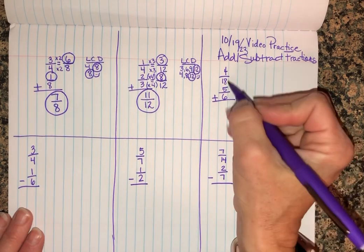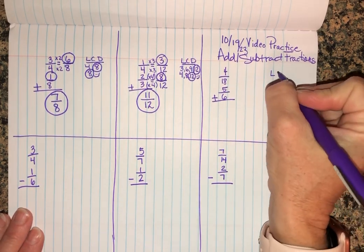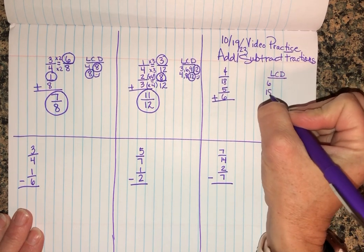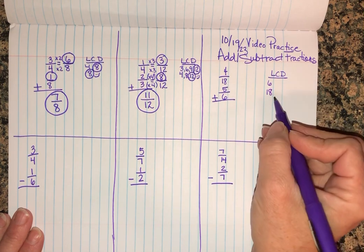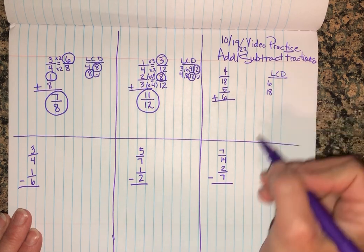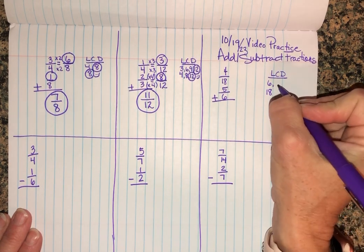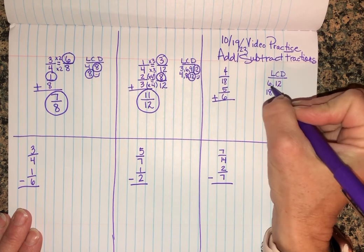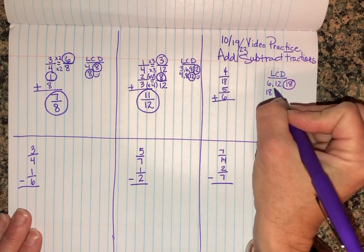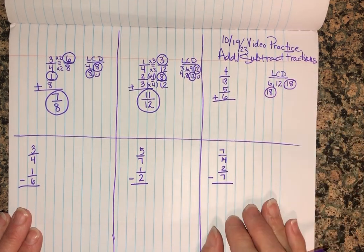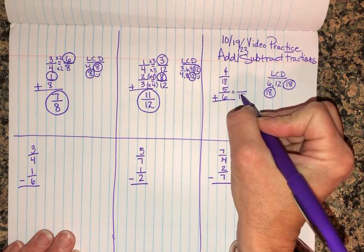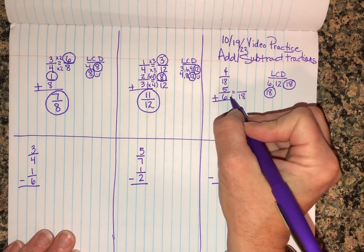This one looks a little different than what we practiced yesterday. I've got four-eighteenths and five-sixths. I'm gonna find my LCD. Always list the smaller number first. If you list eighteen first you're multiplying eighteen times one, eighteen times two, eighteen times three - that's a total pain, don't do that. So we're gonna start with the smaller number, list out multiples of six: six, twelve, and then six times three is eighteen.